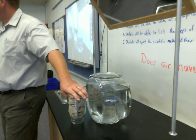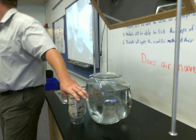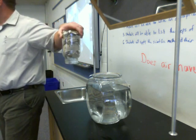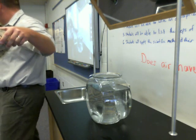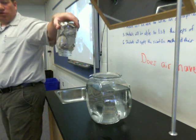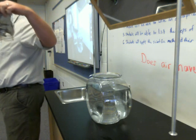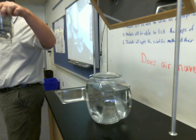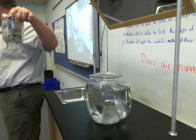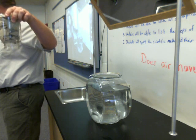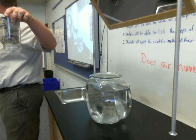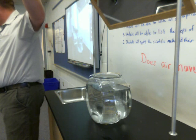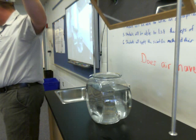The paper towels will fall out into the water if air has volume? Possibly. The paper towels might stay dry if air has volume. Why do you think that would happen? Why would that keep the paper towels dry? Because it will push the water. So you're saying if air has volume, then the water will not be able to enter the jar and the paper towels will stay dry?